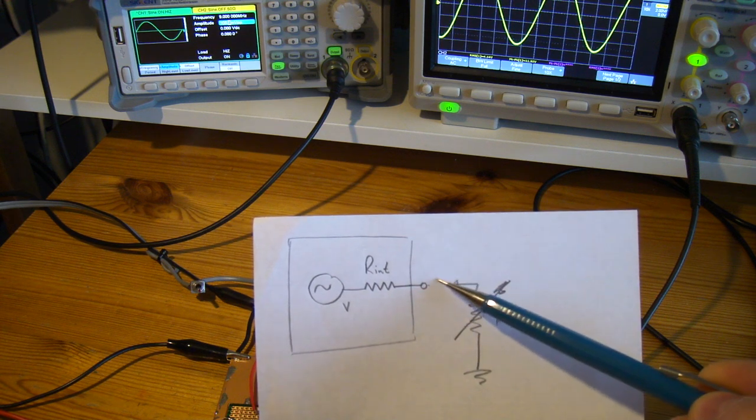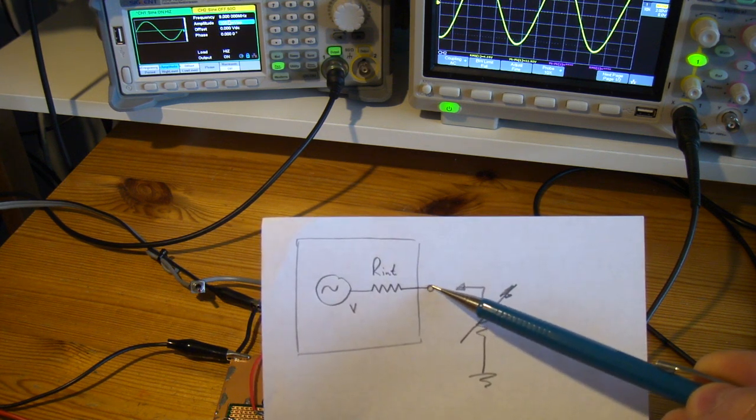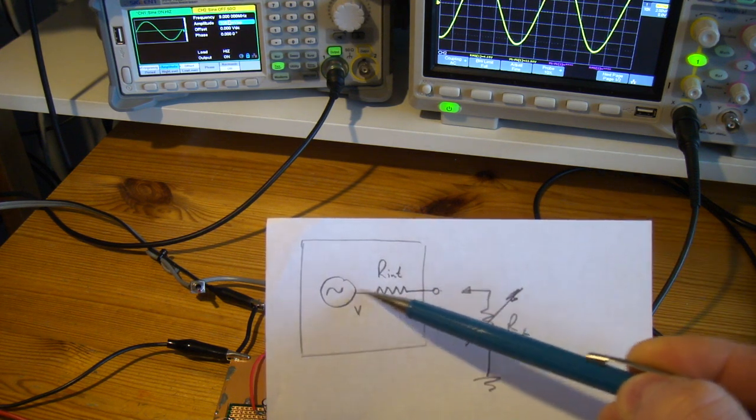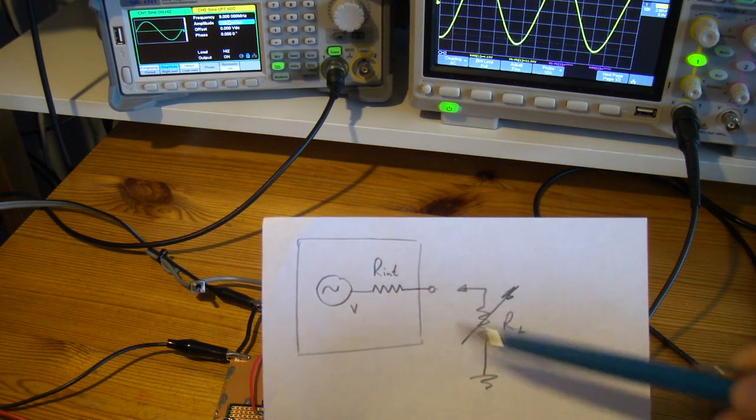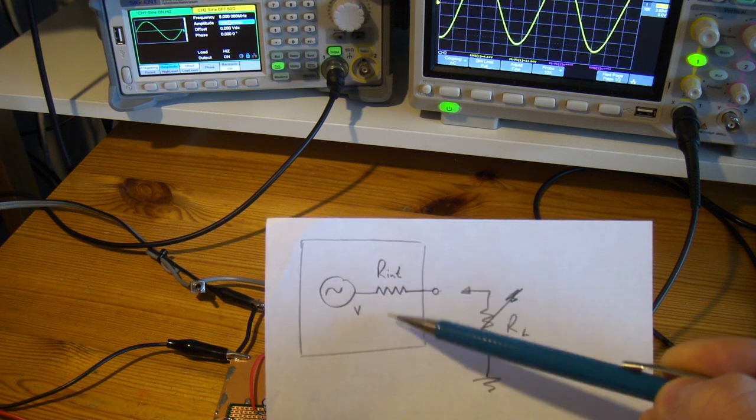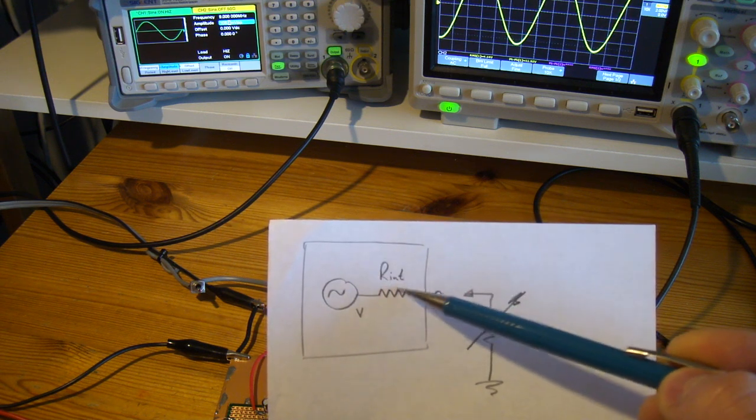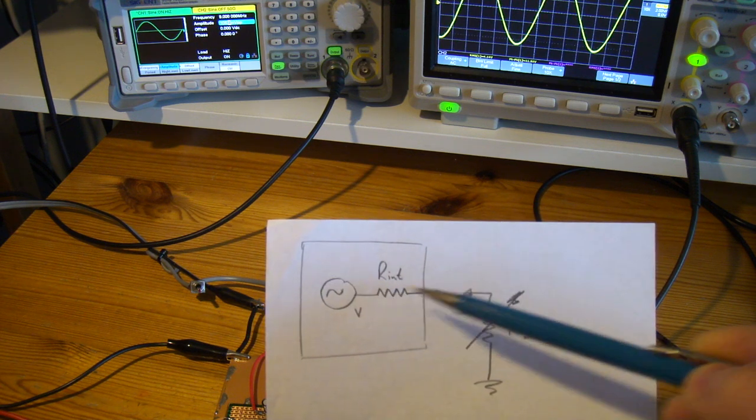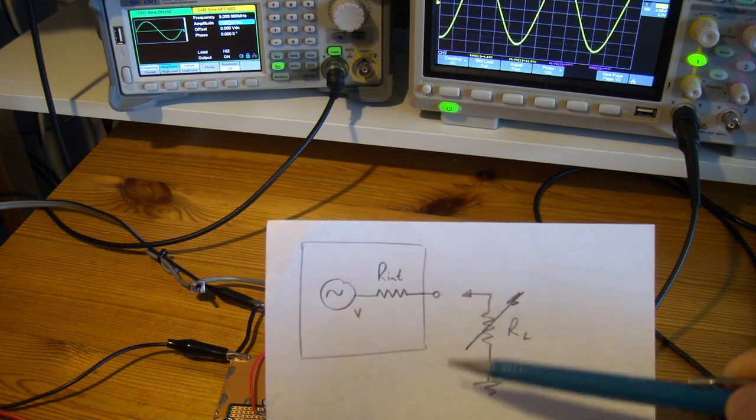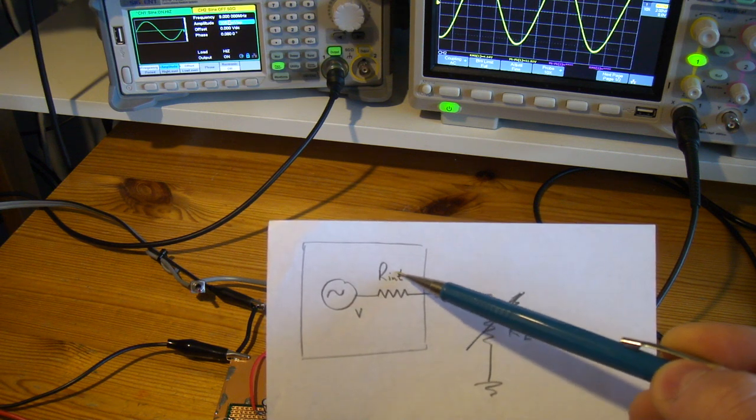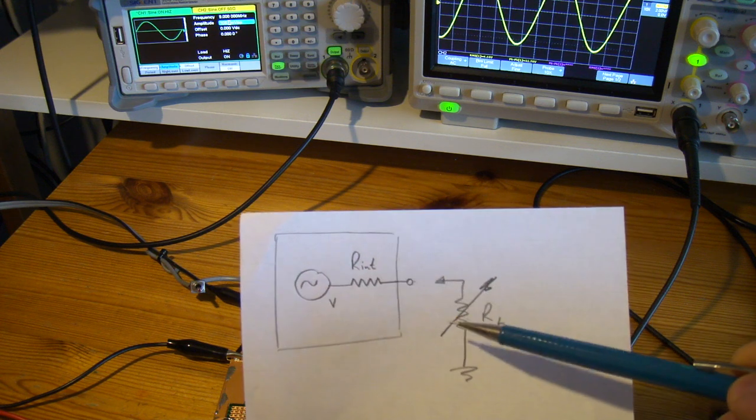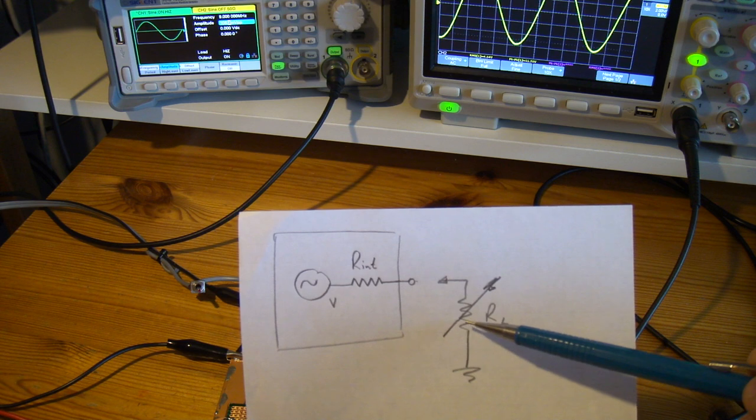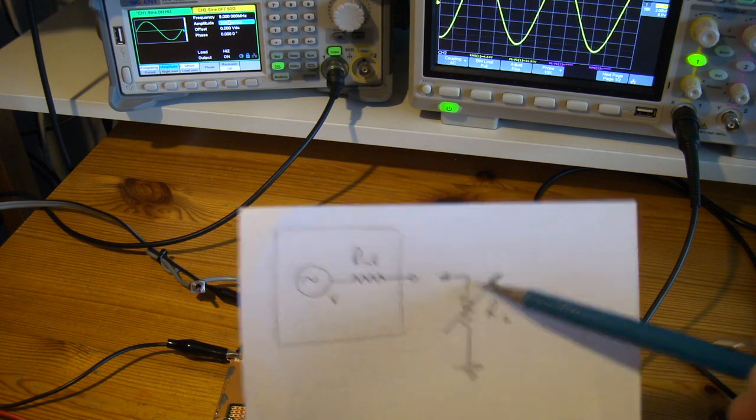I'm going to set the input so at this point here equals 12 volts open load with no load on it. As soon as I put a load on, current will flow and there will be some voltage drop across the internal resistance and then also a voltage now forming on my load. I'm going to vary my load, that's this trim pot here.